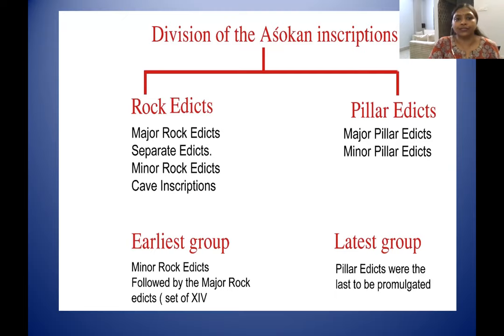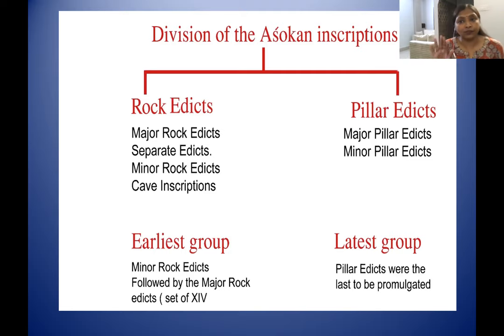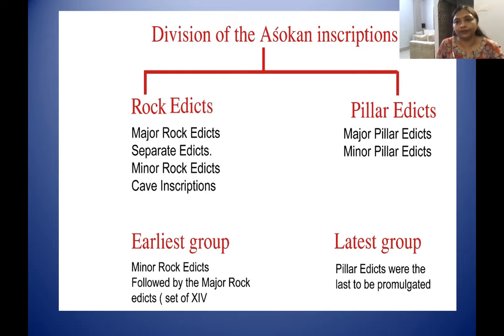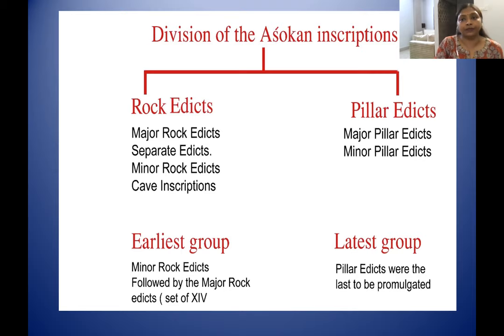Apart from the major rock edict category, we have minor rock edicts which are very important in the South Indian context. Out of the 18 minor rock edicts Ashoka issued at different sites, nine sites — almost 50% — are in Karnataka, and three sites are in Andhra Pradesh. Most of them are in the southern part of the subcontinent, which is very significant. Minor rock edict 1 is found from Delhi southward, but not in the northwestern part. Minor rock edict 2 was specifically issued only for the southern part of the subcontinent — only for the peninsular south.